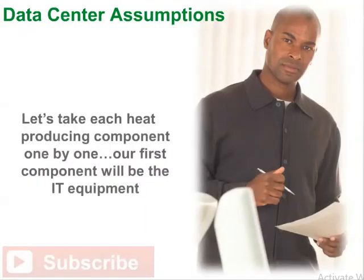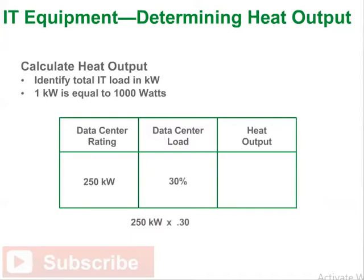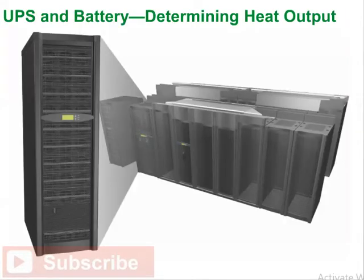Let's take each heat-producing component one by one to work through the heat output calculation worksheet. For IT equipment, we identify our total IT load in kilowatts. Our sample data center is rated at 250 kilowatts, and a kilowatt equals 1,000 watts. Loaded at 30% of capacity, the IT heat output is 75 kilowatts — that is, 250 kilowatts times 0.30. For more information on calculating IT power loads, please consider the DCU course, Calculating Total Power Requirements.